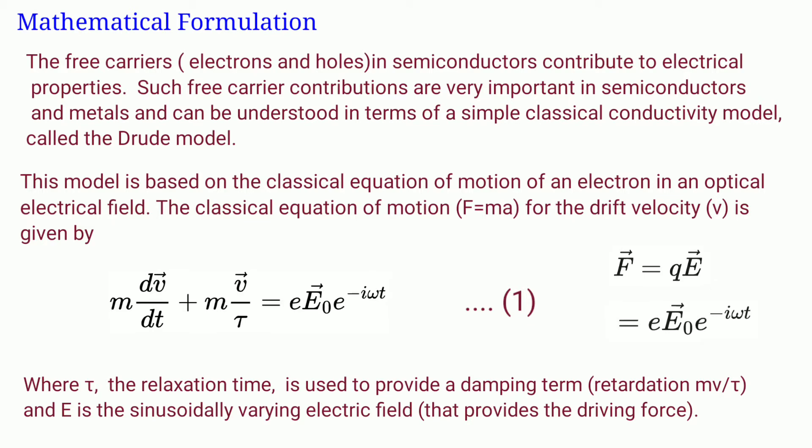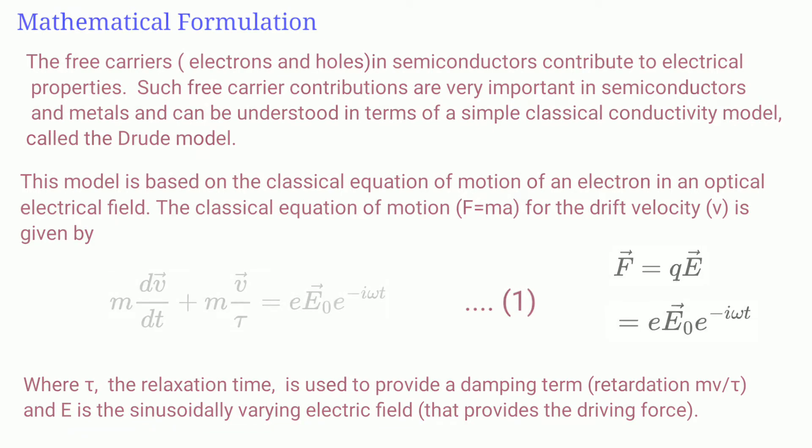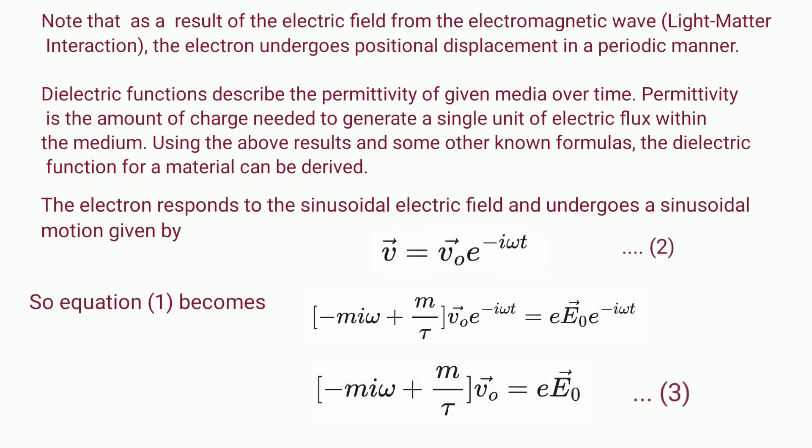The classical equation of motion, F=ma, for the drift velocity v is given by m(dv/dt) + mv/τ = eE₀e^(-iωt). This term provides the driving force which causes this acceleration and this term is the retardation, that is damping. Here τ is the relaxation time and E is the sinusoidally varying electric field that provides the driving force. Omega is the angular frequency. As a result of electric field from the electromagnetic wave, that is light-matter interaction, the electron undergoes a positional displacement in a periodic manner because the electric field E is periodically varying.